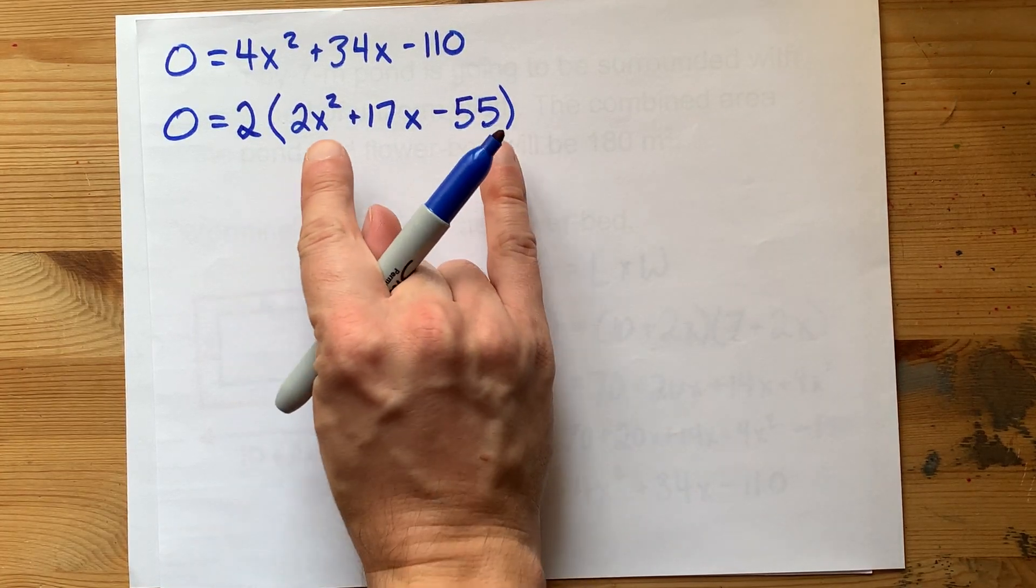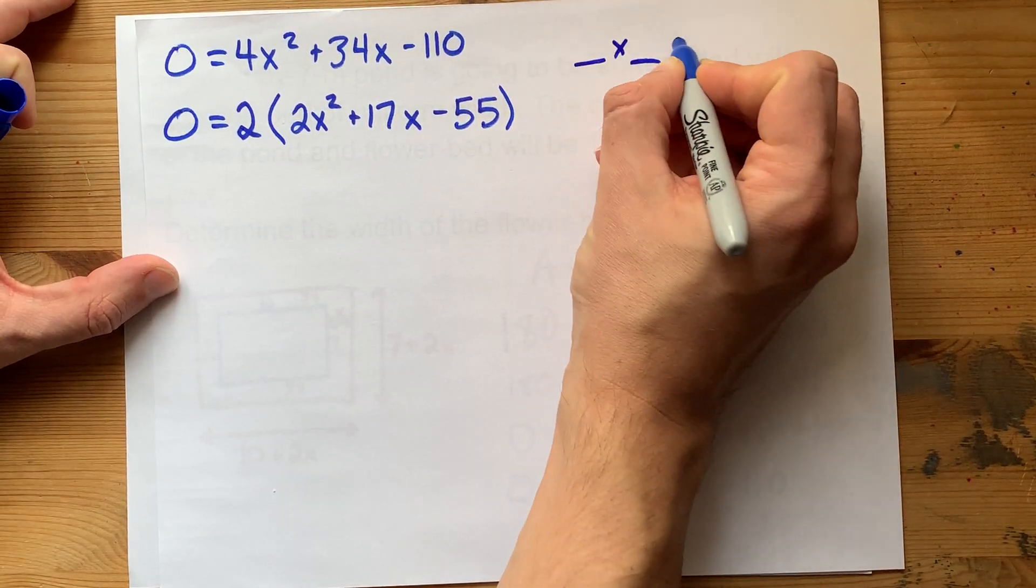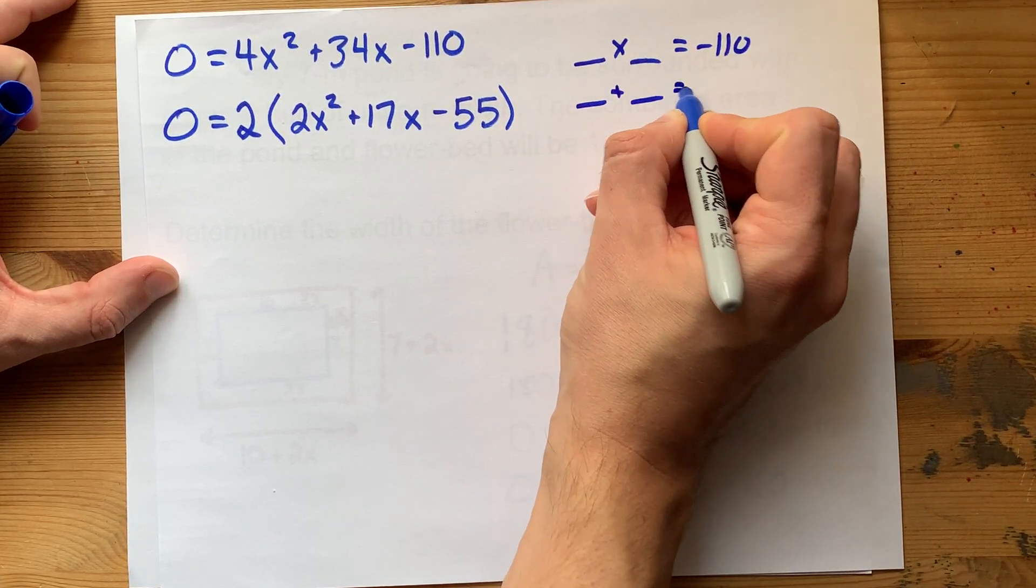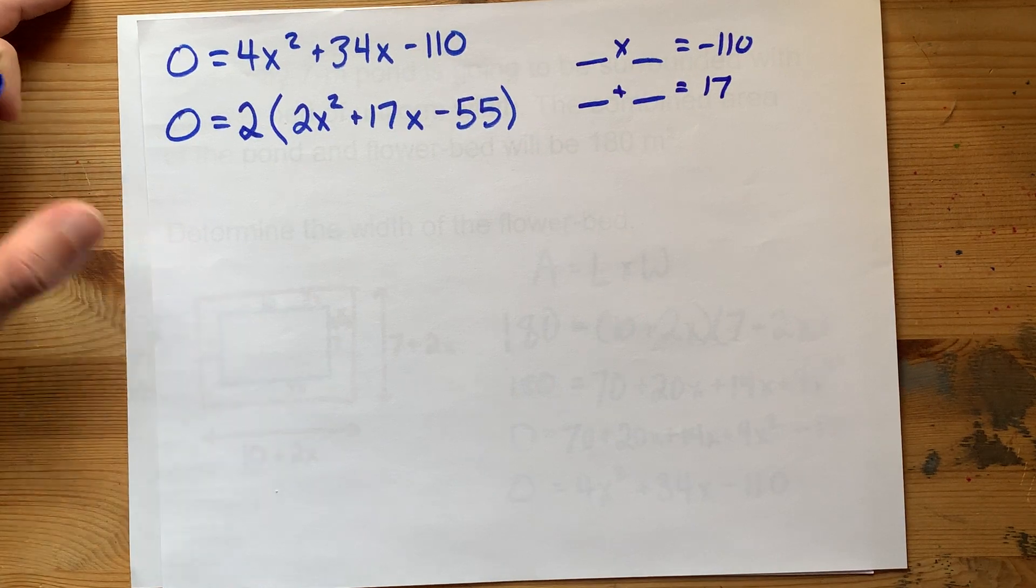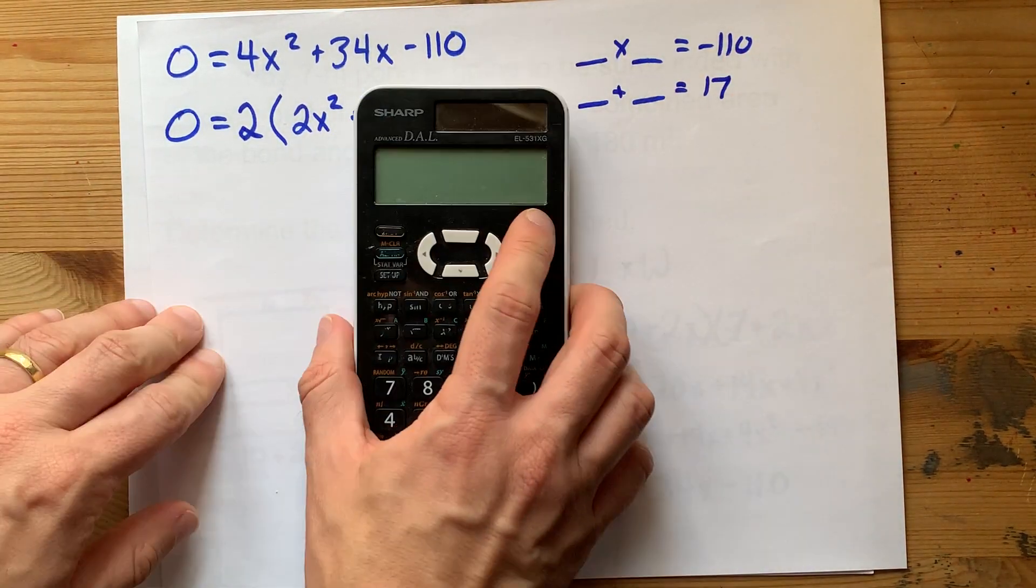You're looking for two numbers that multiply to negative 110 and they have to add to positive 17. Oh my goodness, how are we going to find those? Well, what are some factors of 110?